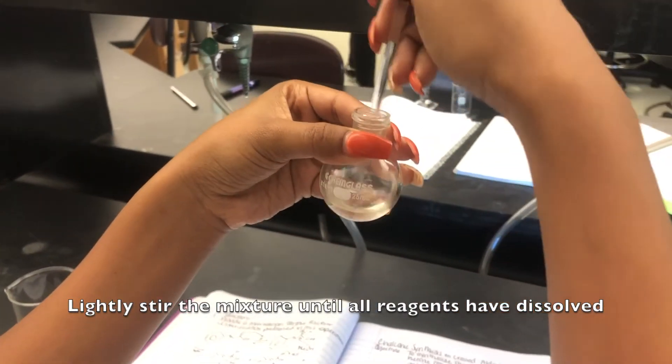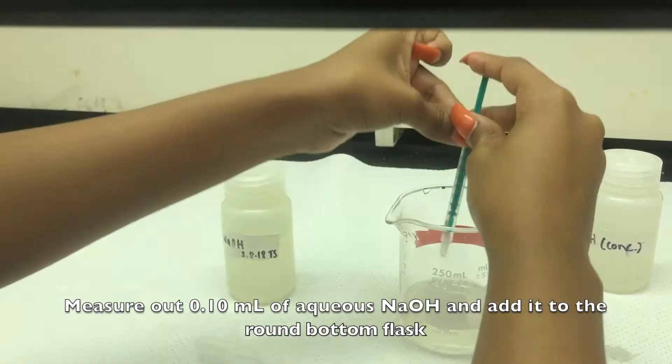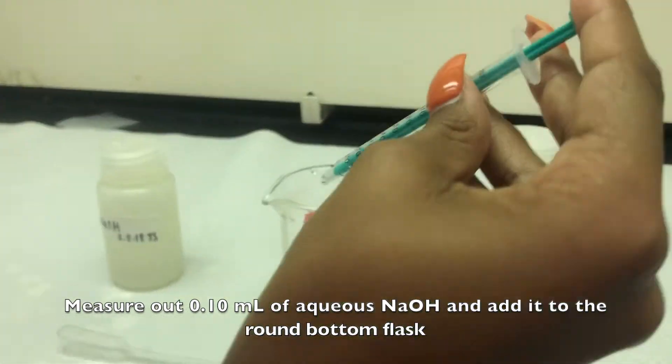Lightly stir the mixture until all reagents have dissolved. Measure out 0.10 milliliters of aqueous sodium hydroxide and add it to the round bottom flask.